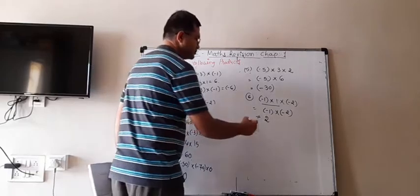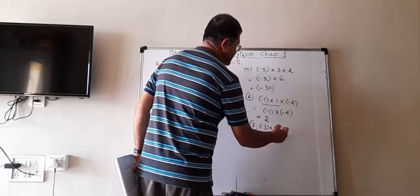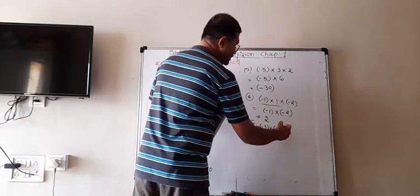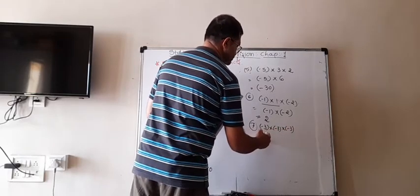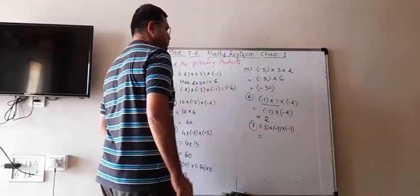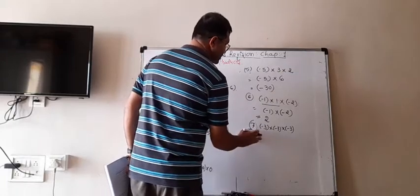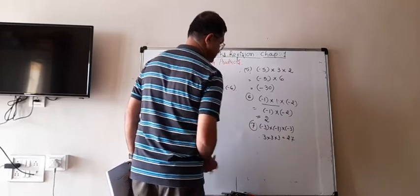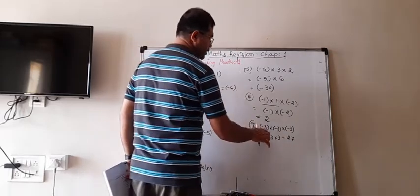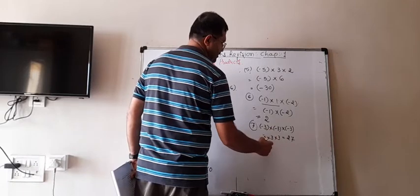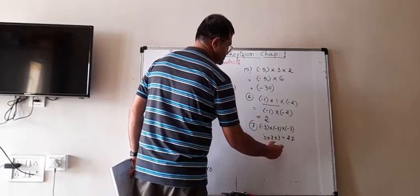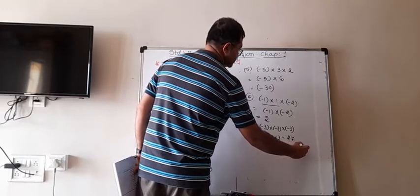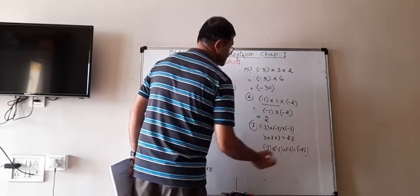Seventh: (-3) × (-3) × (-3). Multiply: 3 × 3 × 3 = 27. The number of negative integers is 3, which is odd, so the answer is negative: -27.